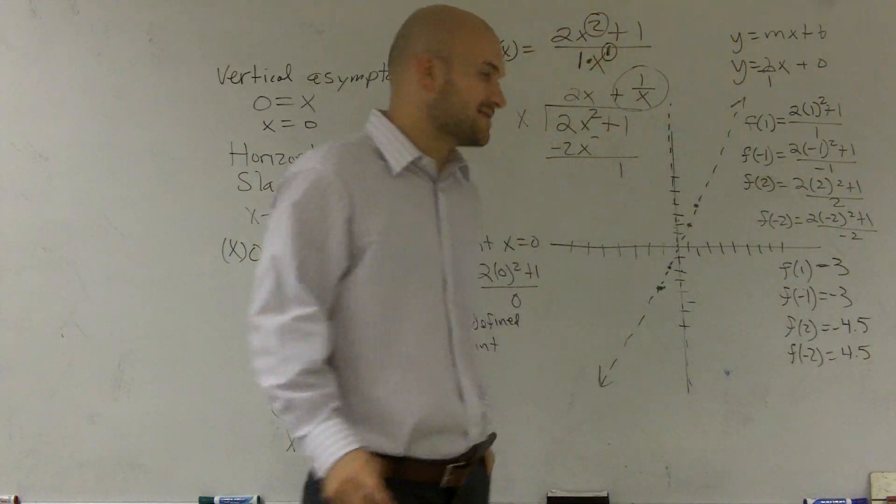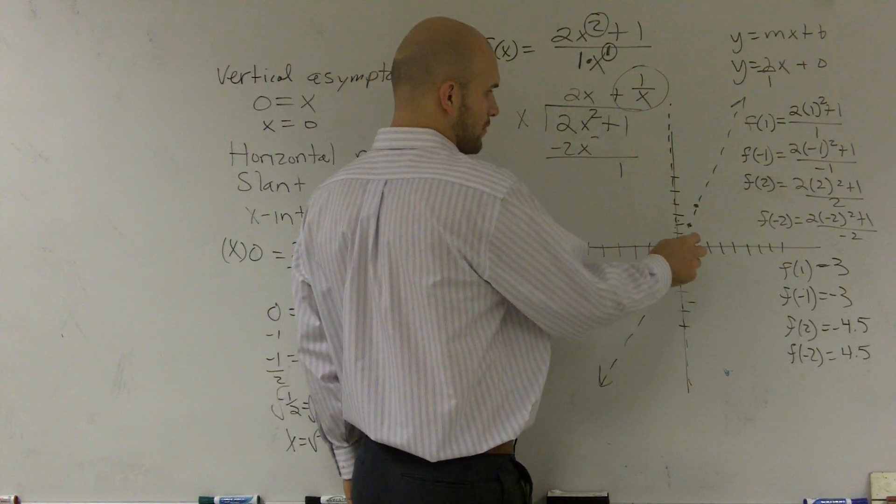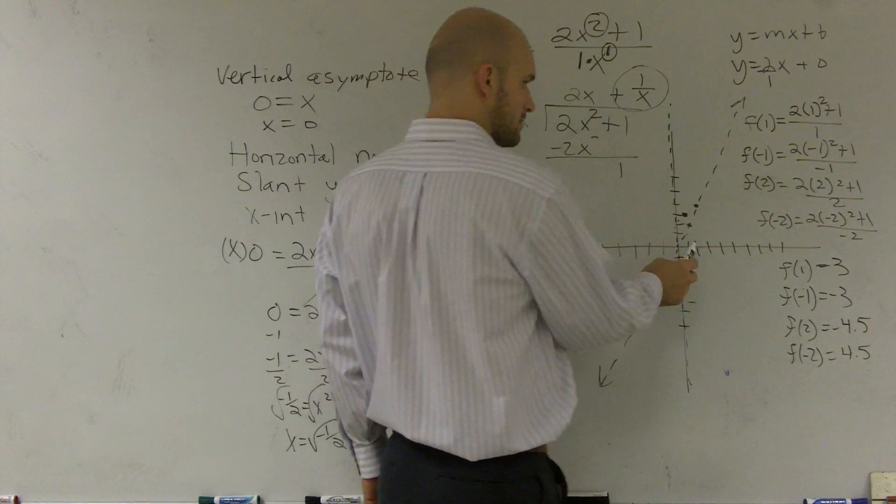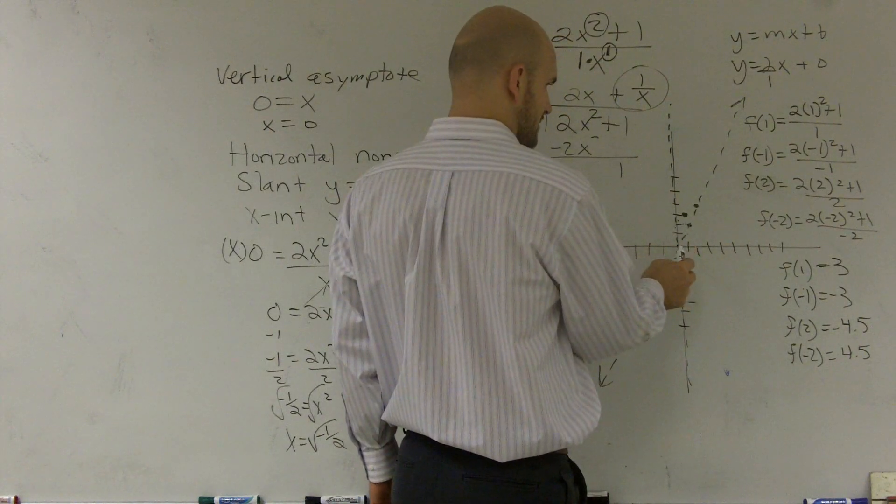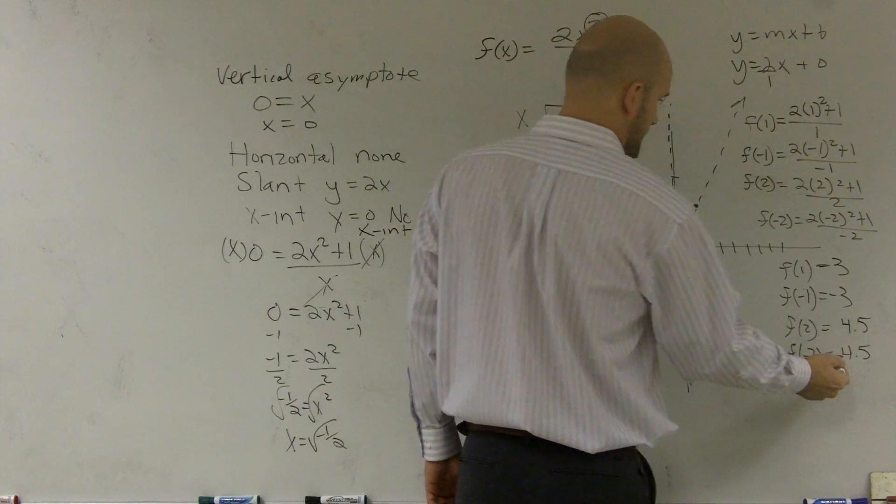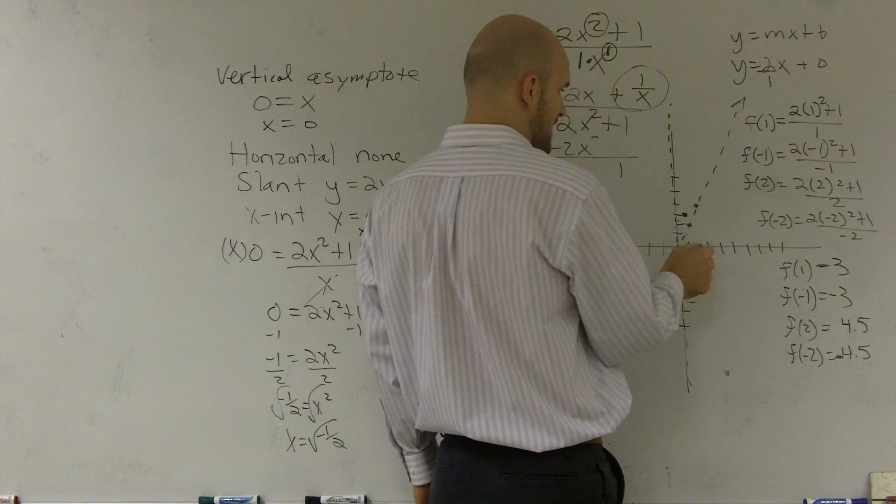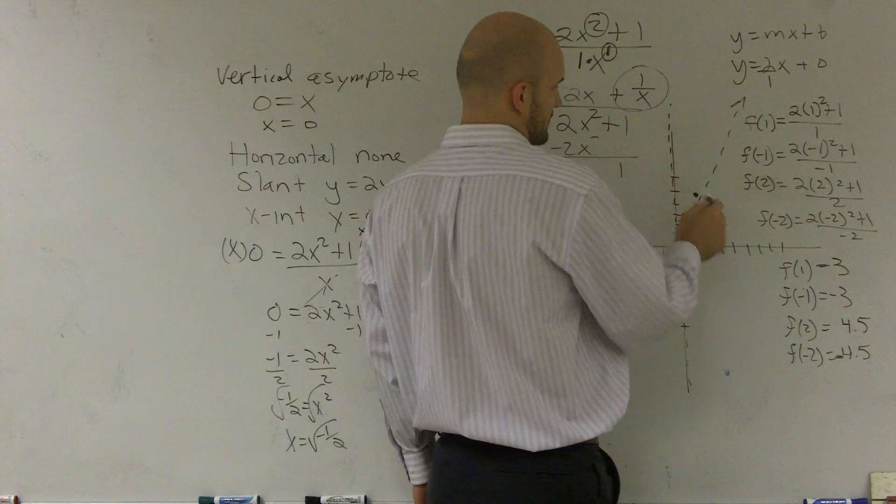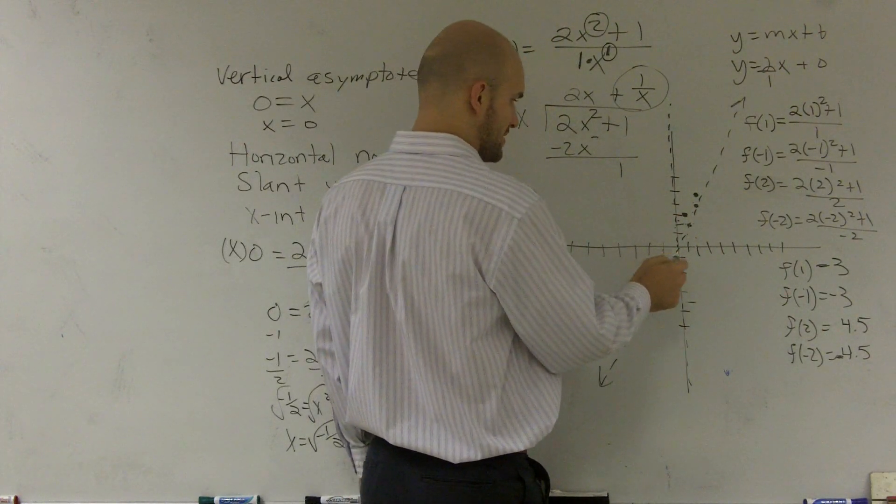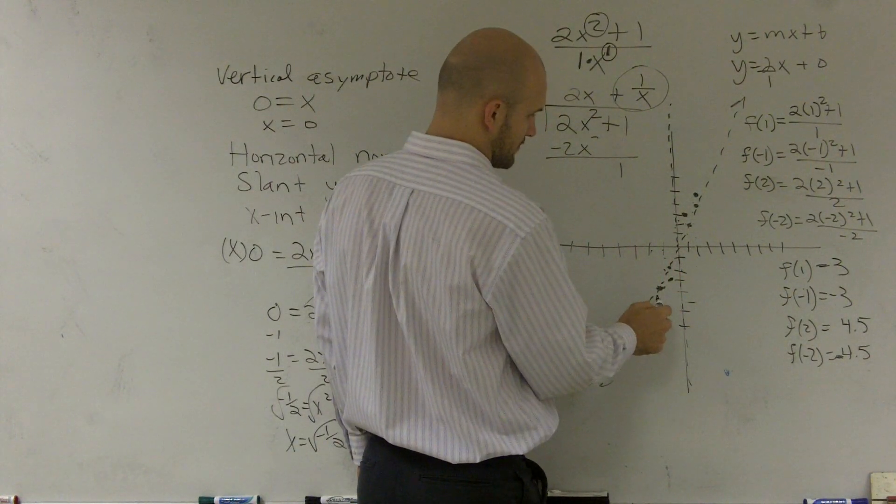So now let's go and graph these. Now, my graph is not perfect, but just work with me. So you have f of 1 and 3. 1, 2, 3. Then you have f of 2. f of 2 is 4.5. 1, 2, 3, 4, 5. And then here it's going to be the same thing. f of negative 1 is negative 3. f of 2 is negative 4.5. Okay.